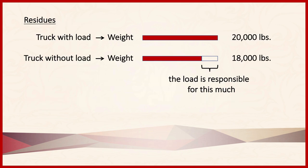Finally, we have the method of residues. Residues differs from the other methods because the assumption is that we have some independent variables already known to be producing an effect, and we want to figure out how much of a contribution one specific variable is making. For example, a truck with its load has a weight of 20,000 pounds. When we remove the load, the truck by itself weighs 18,000 pounds. By the method of residues, we can conclude that the load — the residual amount — is responsible for 2,000 pounds.